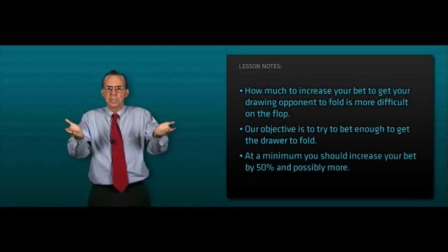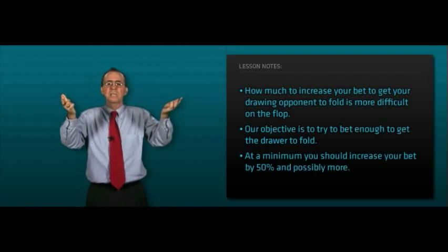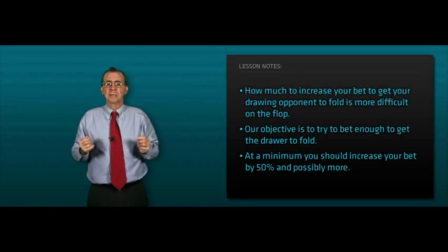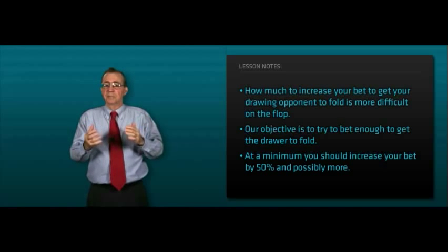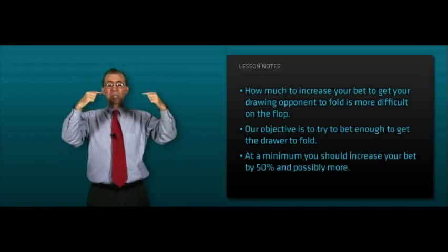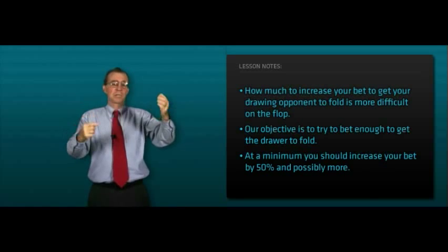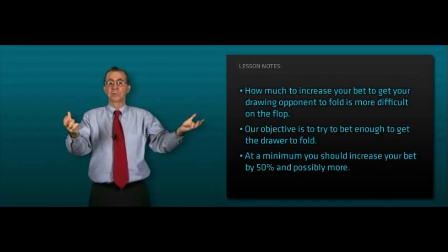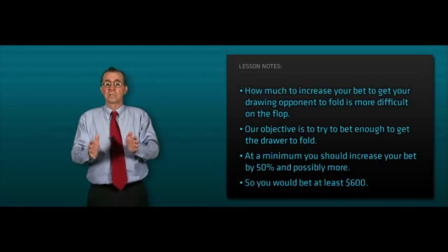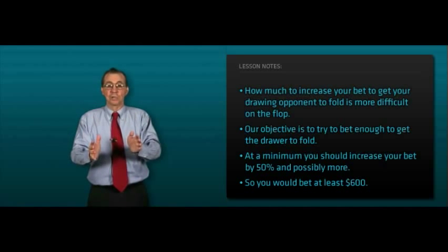At a minimum, we should increase your bet by, we'll say, 50% and possibly more depending on your opponent. In this example, in step six above, we mentally bet $400 and that put him into a slight negative expected value territory. Well, 50% of that $400 is $200. So you would bet at least $600 hoping he's going to fold.